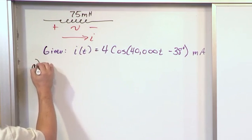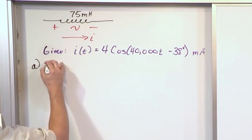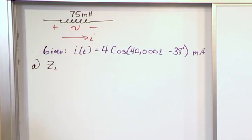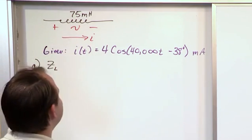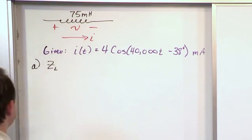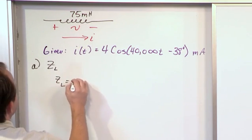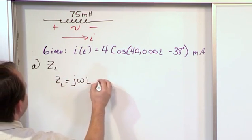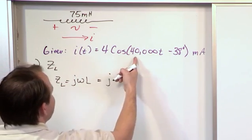So let's do part A. What is the impedance of the inductor? We write that as Z sub L. What's the impedance? That's the first thing. We need to represent it as an impedance, and then we can do calculations based on that. So we know that the impedance of any inductor is j times omega times L.